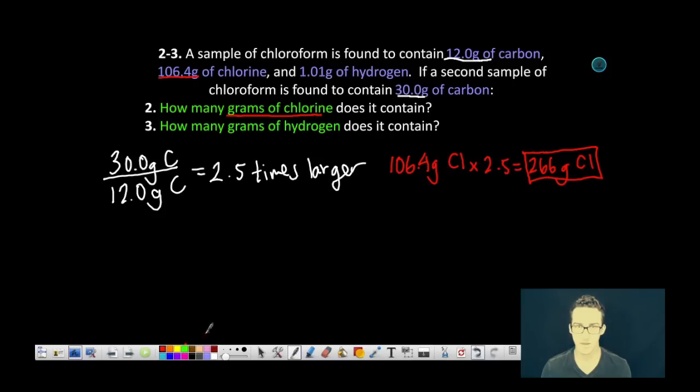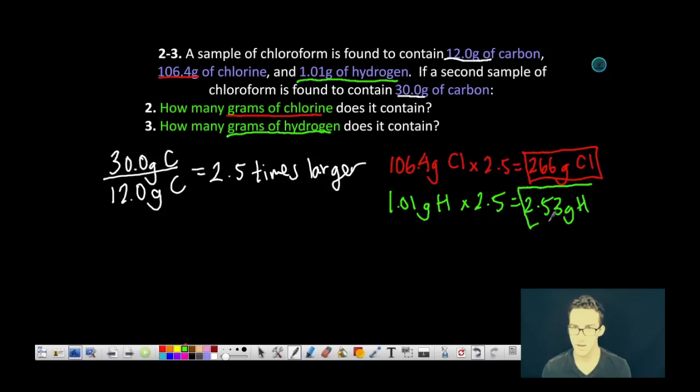If we look at the third question, same thing for determining grams of hydrogen. It's just taking the original amount in that original sample, the 1.01 grams of hydrogen, multiplying it by 2.5 to give us 2.53 grams of hydrogen. And there you go. Boom. Done.